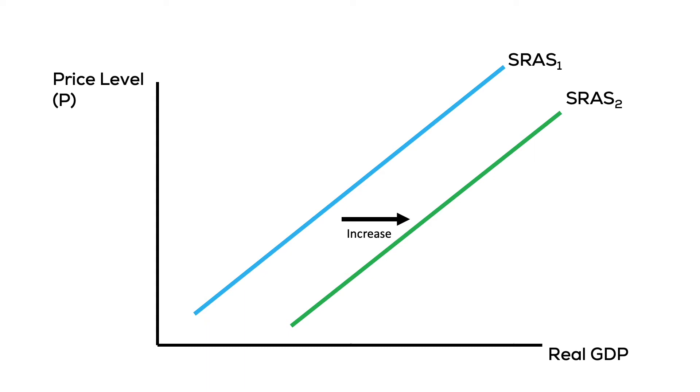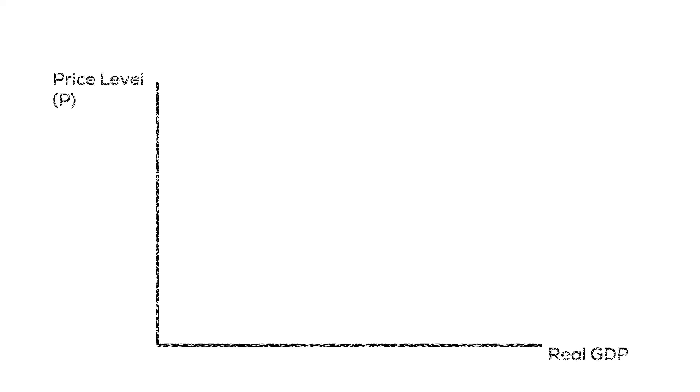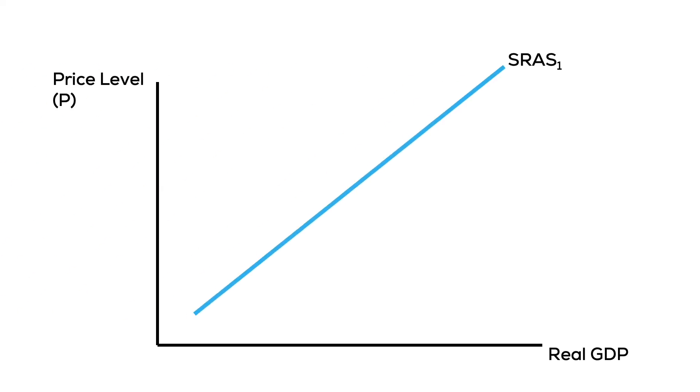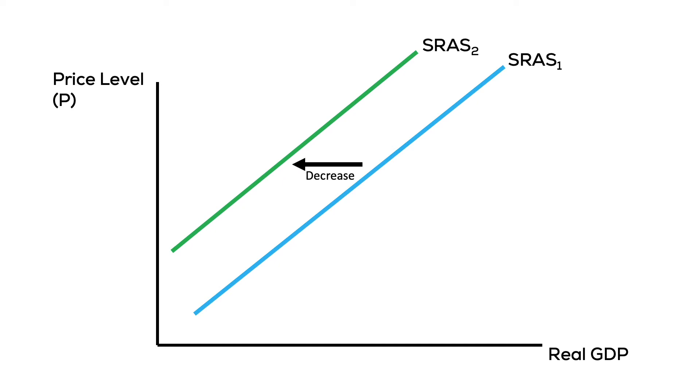Alternatively, increases in the price of resources will make production more costly, reducing production. This is represented by a shift in the aggregate supply curve to the left.